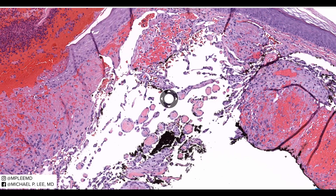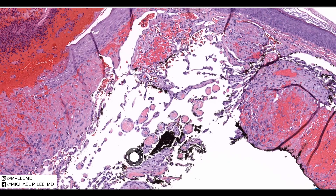And then you have these structures here — those are a little bit better example of these papillae. So just remember: when you have structures like this floating in the middle of nowhere, it's a papilla. You can see this in things like when you're looking at the placenta — it looks just kind of like this.